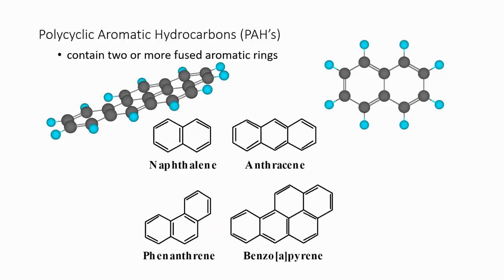Next, we look at polycyclic aromatic hydrocarbons, where we have two or more fused rings that look like fused benzene rings. At each point of ring fusion, hydrogens are absent — we have to remove the hydrogens at those points in order to fuse the rings.